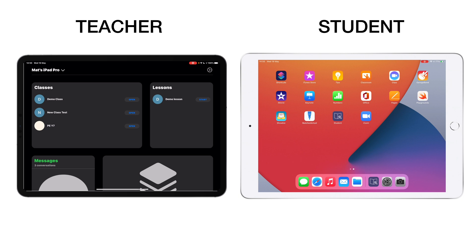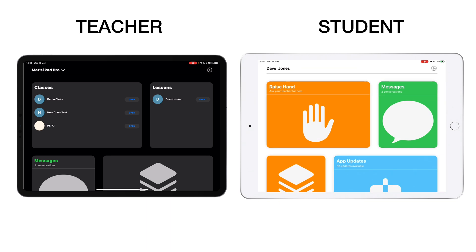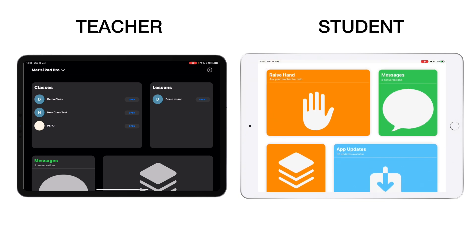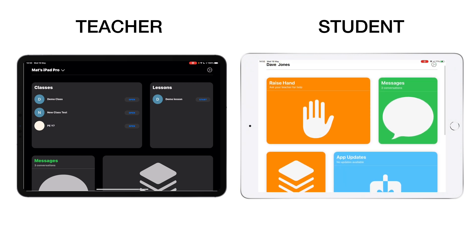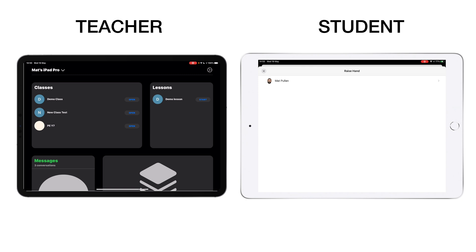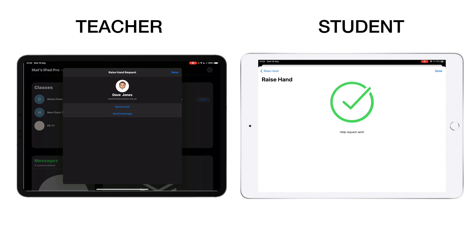We're going to concentrate mostly on the classes section today and look at the impact on the student device on the right-hand side. When students open up the Jamf Student app, they'll see messages from their teacher, app updates, and access to resources. They also have the option to raise their hand in class — if they tap raise hand, it signals to me as their teacher that they need help, and that pops up on my screen. This works in the classroom or remotely at home.